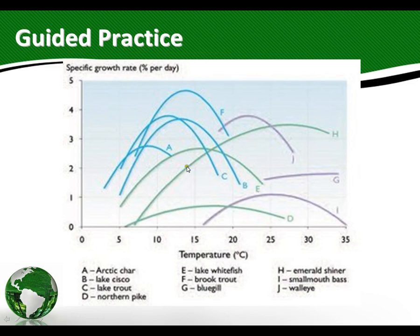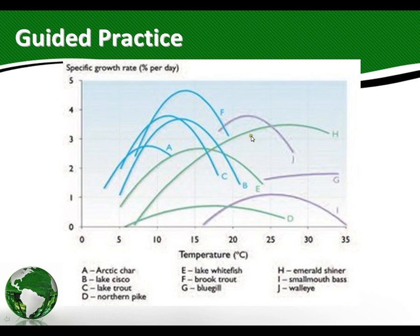That means that's an optimum level for that fish. Some of these fish have a very wide tolerance curve. This one right here, letter H — the emerald shiner — it can survive in cooler water, about 6–7 degrees, and it will have some growth. But as the temperature gets warmer, its growth rate increases, so it can survive in a lot of different temperatures. This one up here — G, the bluegill — can only survive in warmer temperatures. That's how you look at a graph like this.